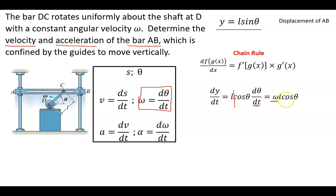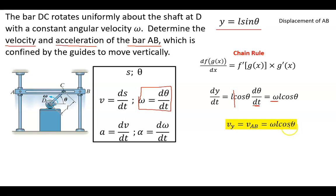We can replace dθ/dt with omega. So we end up with a velocity of omega times L times the cosine of theta. That is the function you can use to determine the velocity of AB going up and down. If you want to test this, plug in 90 degrees and 270 degrees — that's where it has to change direction — and the velocity should go to zero.